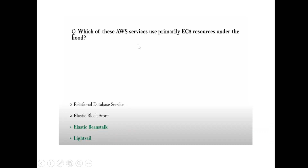Question: Which of these AWS services use primarily EC2 resources under the hood? Answer: Elastic Beanstalk and Elastic Block Store — EBS uses AWS Lambda and Elastic Beanstalk things.